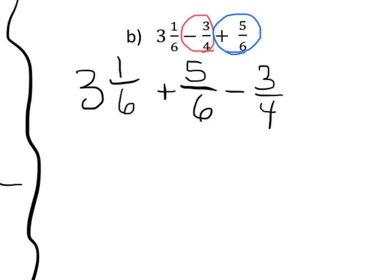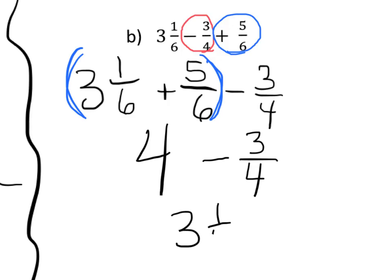Now that we've done this, we can use the associative property right here. And 3 and 1 6th plus 5 6ths, that equals 4, minus 3 4ths.